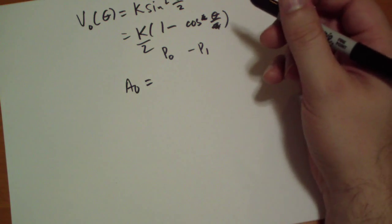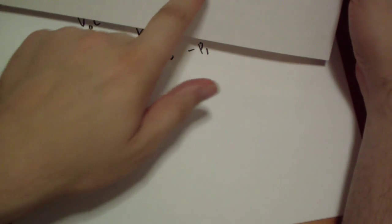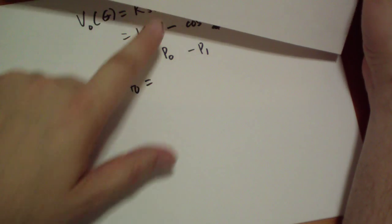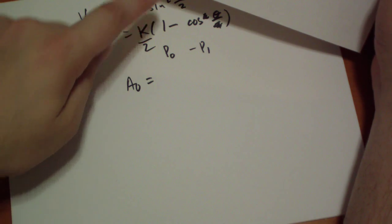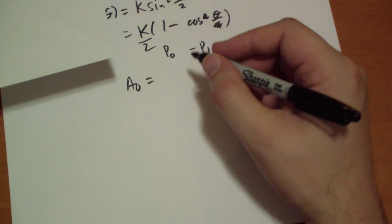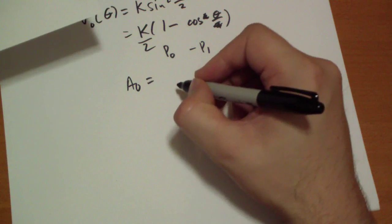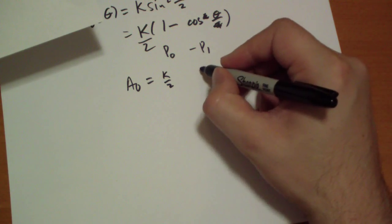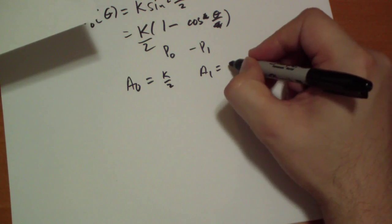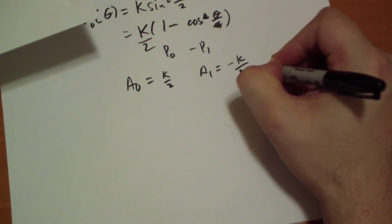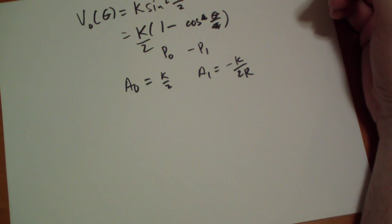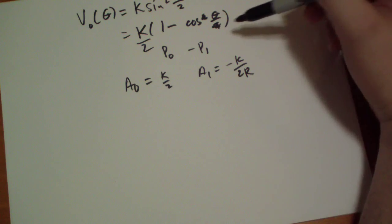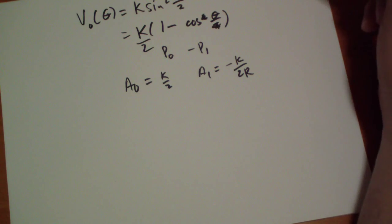So a_0 is equal to, well P_0 times this, that's going to get us 2 over 2m plus 1 times k over 2, so a_0 is going to be k over 2. And a_1 is going to be minus k over 2R. And all the other ones of course are going to be 0, so anything greater than 1 is all 0.